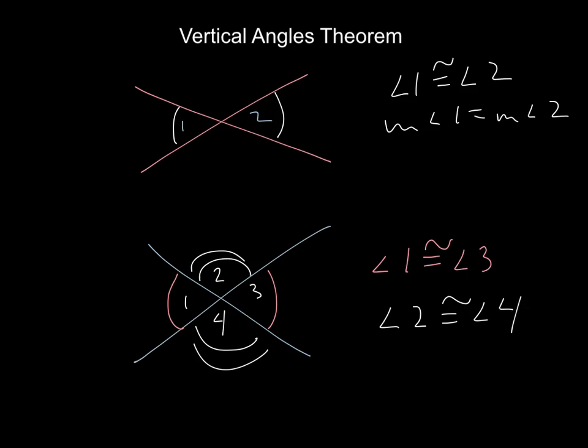That's the vertical angles theorem. It simply says that a pair of vertical angles are congruent or have the same measure.